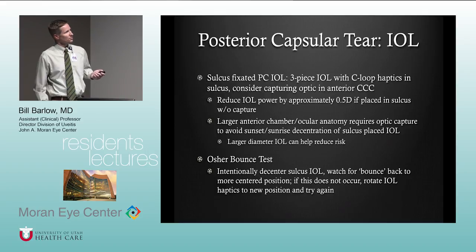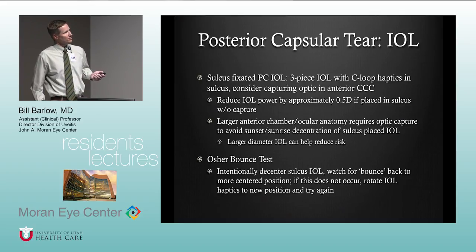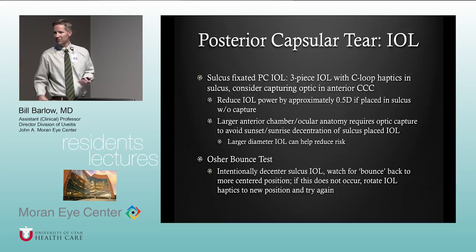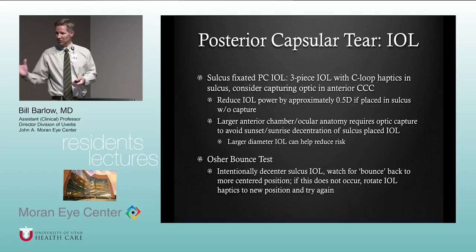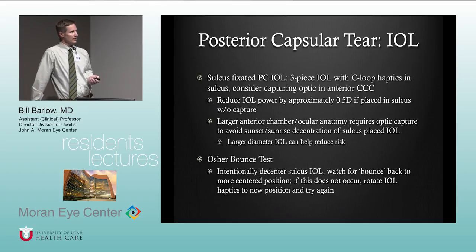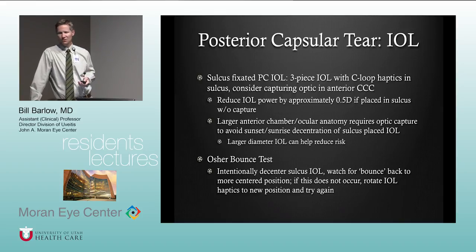For a sulcus-fixated lens, use a three-piece lens with C-loop haptics in the sulcus, and you can capture the optic in the rhexis — placing the optic posterior to the rhexis. When placing in the sulcus, reduce the power by approximately a half diopter. For higher-powered lenses — over 18 diopters — reduce by a full diopter; at very high powers like 27-28 and beyond, reduce by a diopter and a half. For low-powered lenses under about 9 diopters, no change is likely needed. A large anterior chamber means a large sulcus, and you may not have a lens big enough to fit stably — attempting to capture the optic will make a big difference in that situation.